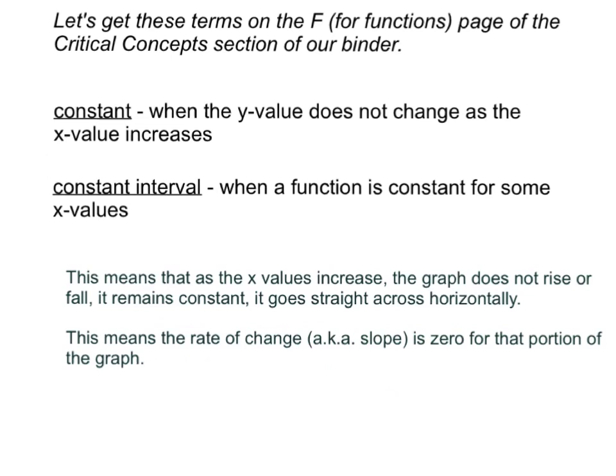Now, with a constant, this means that as the x value increases, so as we are moving across our graph, the graph will not rise or fall. We call that remaining constant. The graph will go straight across in a horizontal pattern. Remember that with horizontal lines, our rate of change or slope is zero when we have a horizontal line. So, for that portion of the graph, our rate of change is zero.